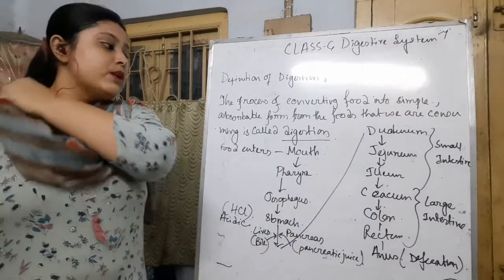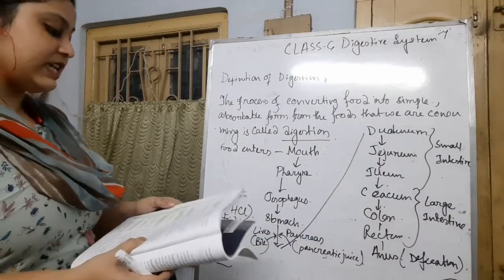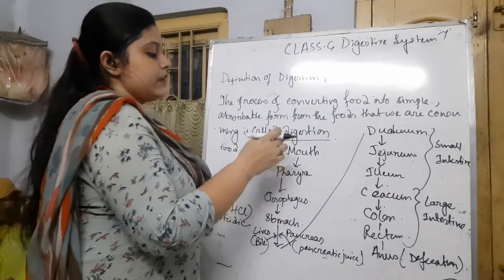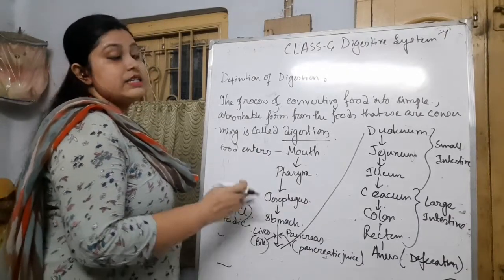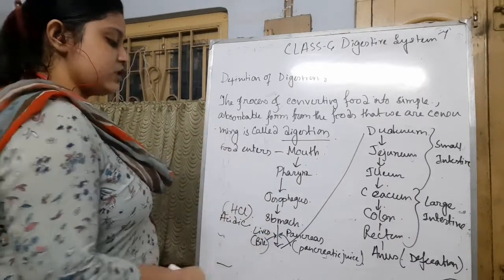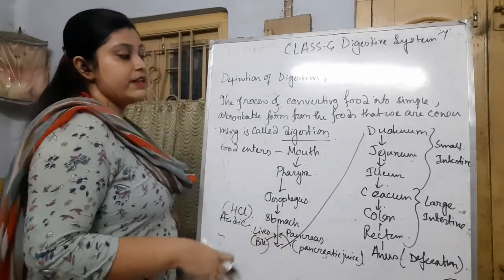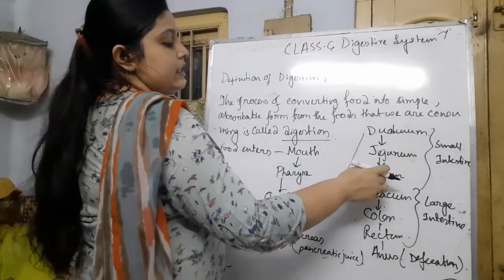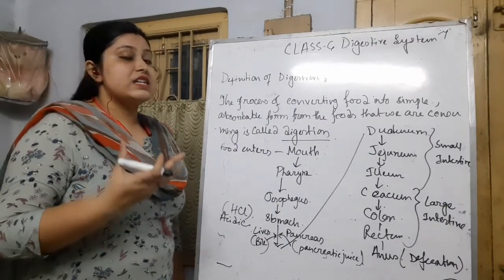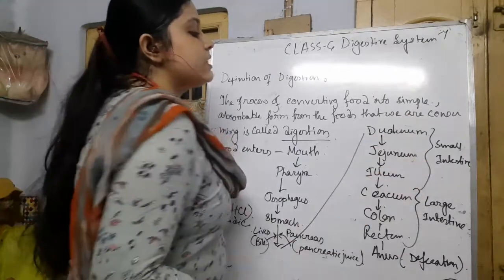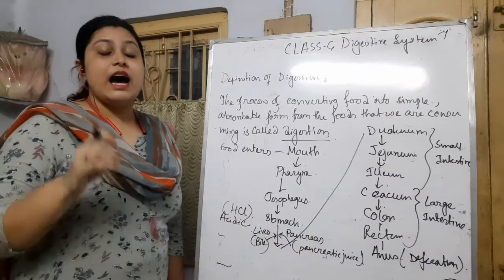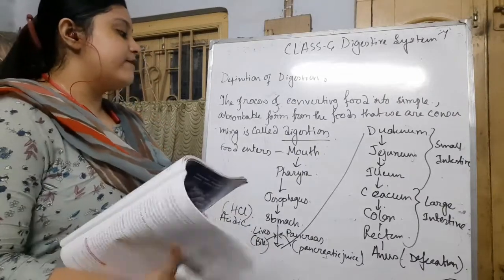So this is the full flowchart of the digestive system — the digestion of humans. First, food enters from the mouth, then pharynx, then esophagus, then stomach where HCl mixes with it. After the stomach, bile from the liver and pancreatic juice from the pancreas mix with the food. Then it comes to the duodenum, then the jejunum, then the ileum. From the villi of the small intestine, digested food starts to be absorbed. Then the large intestine parts — cecum, colon, and rectum — and finally defecation happens through the anus, where undigested food exits the body.